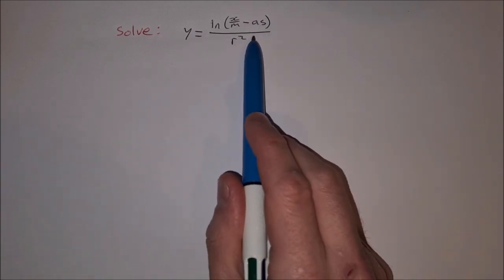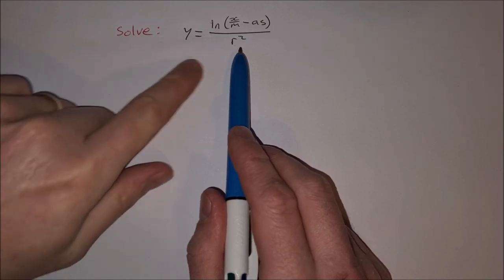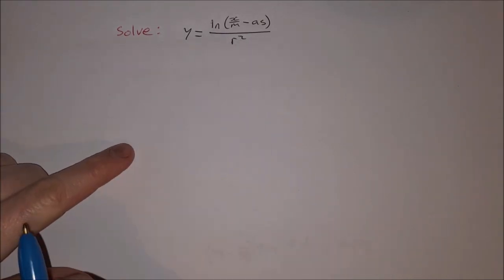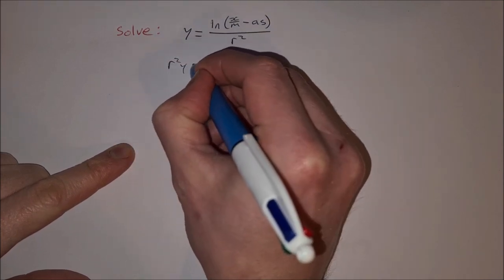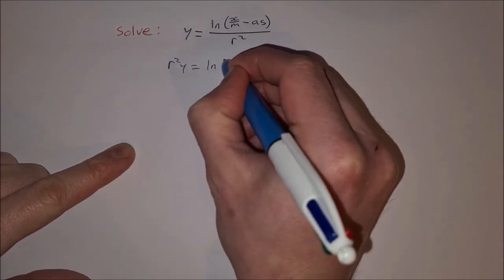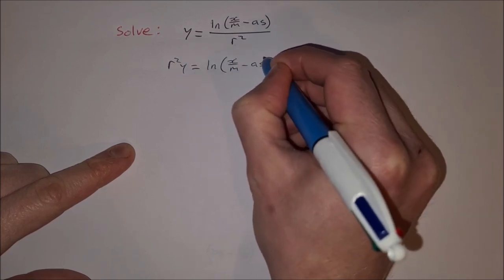So the first thing I notice is I have a fraction and I definitely don't like fractions in my equations. So I'm going to multiply across both sides by r squared, so that'll give me r squared y equals the natural log of x over m minus a s.